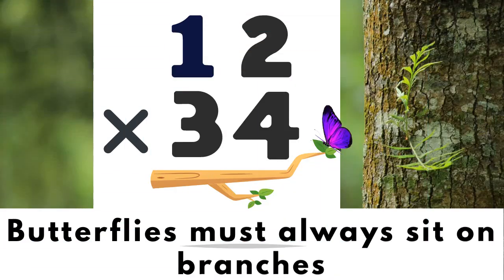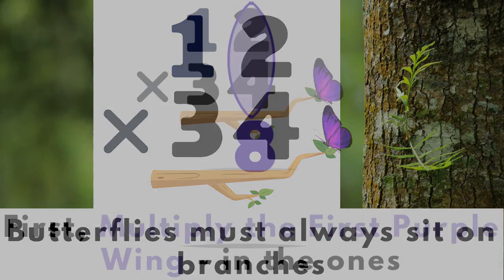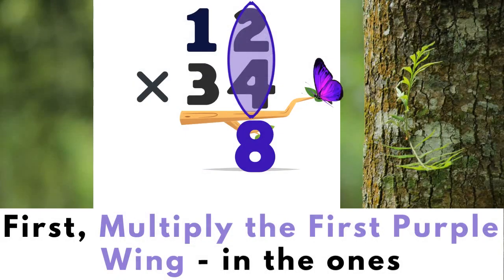So butterflies must always sit on branches. First, multiply the first purple wing in the ones place. In this case, it's two times four, which is eight.